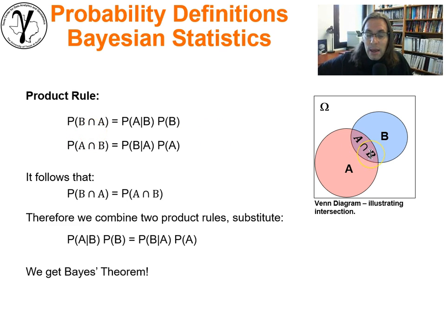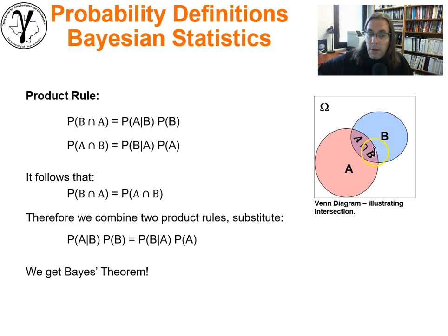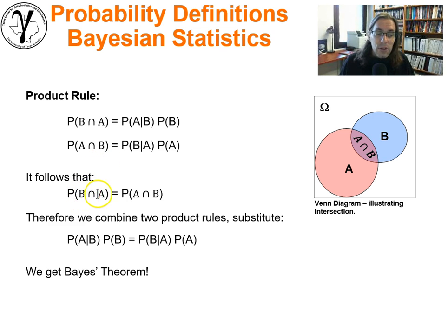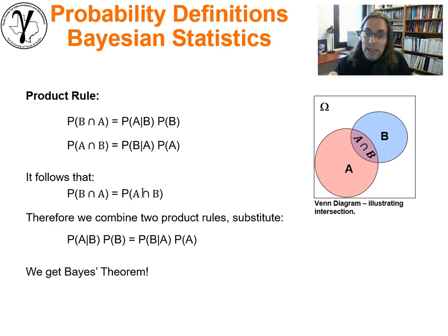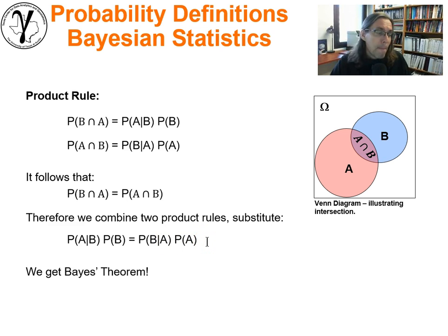The probability of A given B is simply going to be equal to this intersection, divided by the probability of B. And vice versa, the probability of B given A is simply going to be this intersected area, divided by the probability of A. If you take the denominator and put it on the other side, you get the product rule. It follows from simple probability logic that the probability of B intersection with A equals the probability of A intersected with B. Substituting the two product rules into this axiomatic statement about symmetry gives us: probability of A given B times probability of B equals probability of B given A times probability of A. And this is Bayes' theorem.